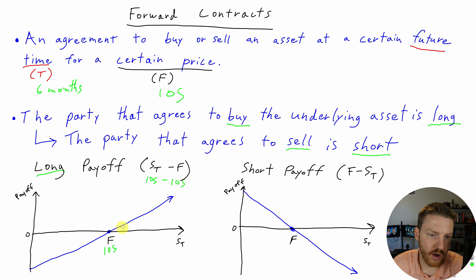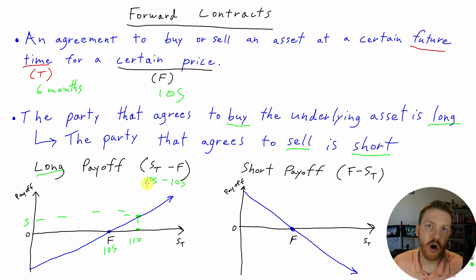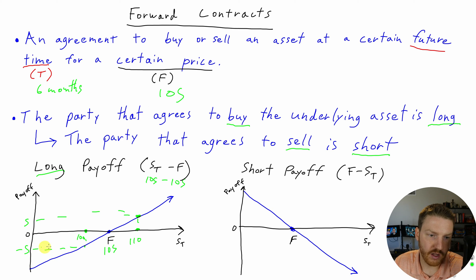The graph is at zero when the price of the stock at expiration equals the forward price of $105. However, if the stock was at $110 when the contract expired, we would see a payoff of $5. As the stock price rises, we get a greater payoff — if we're long, we benefit when the price rises. Whereas if the stock was only $100 at expiration, our payoff would be negative $5, and we'd lose money as long because the price was below the forward price.